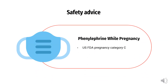Safety Advice: US FDA Pregnancy Category C. Animal reproduction studies have shown an adverse effect on the fetus and there are no adequate and well-controlled studies in humans, but potential benefits may warrant use of the drug in pregnant women despite potential risks. Use is not recommended unless clearly needed.